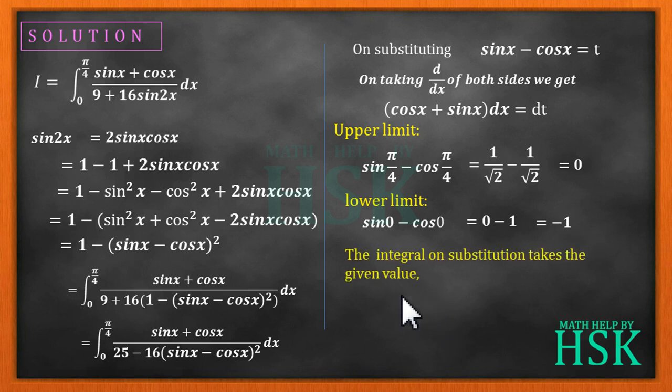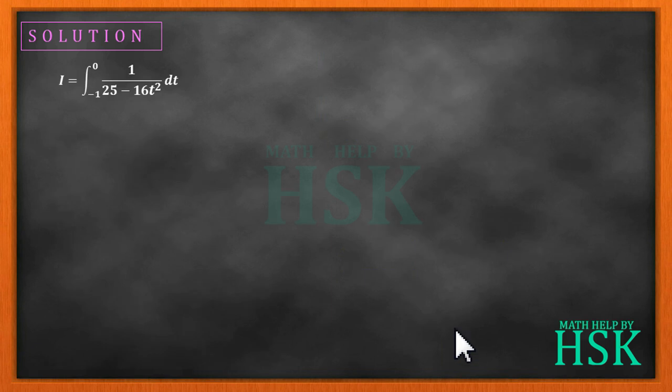On substitution we get the value of I is 1 upon 25 minus 16 t square dt from the limit minus 1 to 0. Now we can further write the value of I is 1 upon 5 square minus 4t whole square dt from the limit minus 1 to 0.